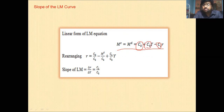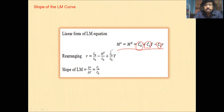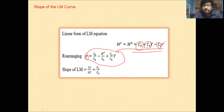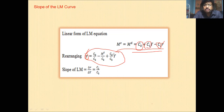Sensitivity of money demand to interest rate is negatively related, and sensitivity of money demand to income is positively related. After rearranging the linear form of the LM equation, we get R equal to C0/C2 minus MS/C2 plus C1/C2 · Y, with R as the only variable on the left-hand side.